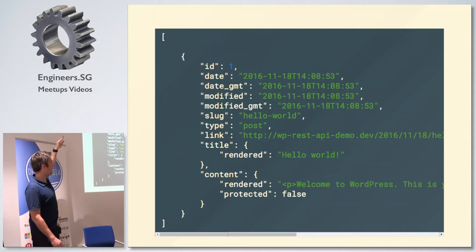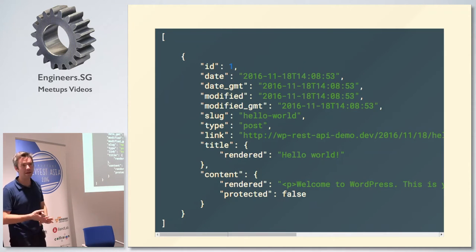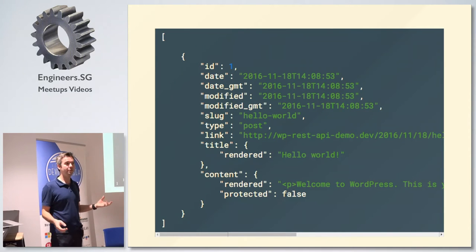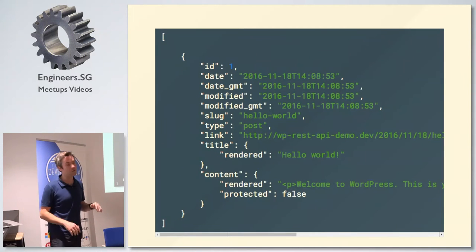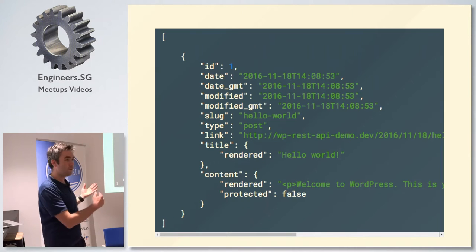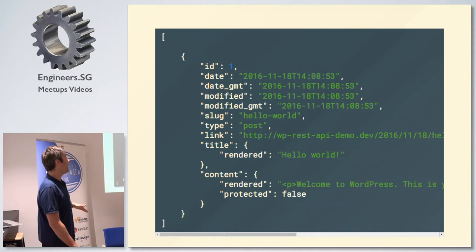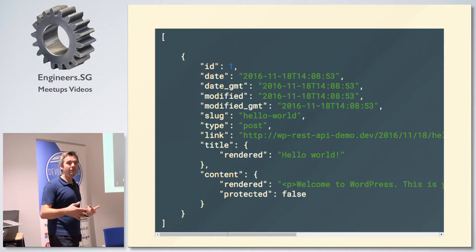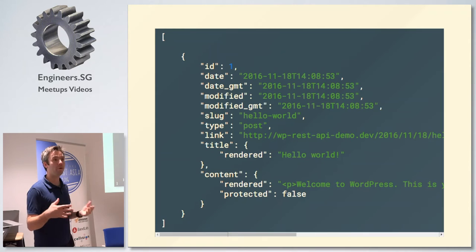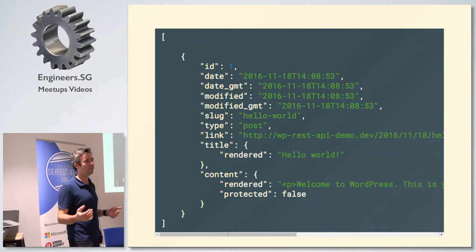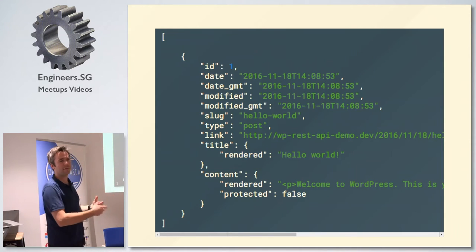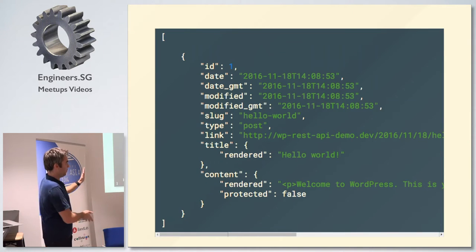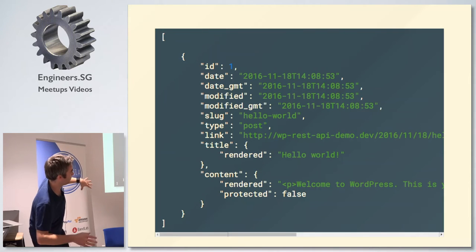There are also other fields returned — things relating to category, post type, taxonomy, and other metadata. If you only have one post, going to the posts endpoint gives you that one post. If you have many, it does whatever the default loop is — by default the ten most recent posts, returned as a JSON array. The square brackets at the top and bottom represent that array, and the posts continue separated by commas.